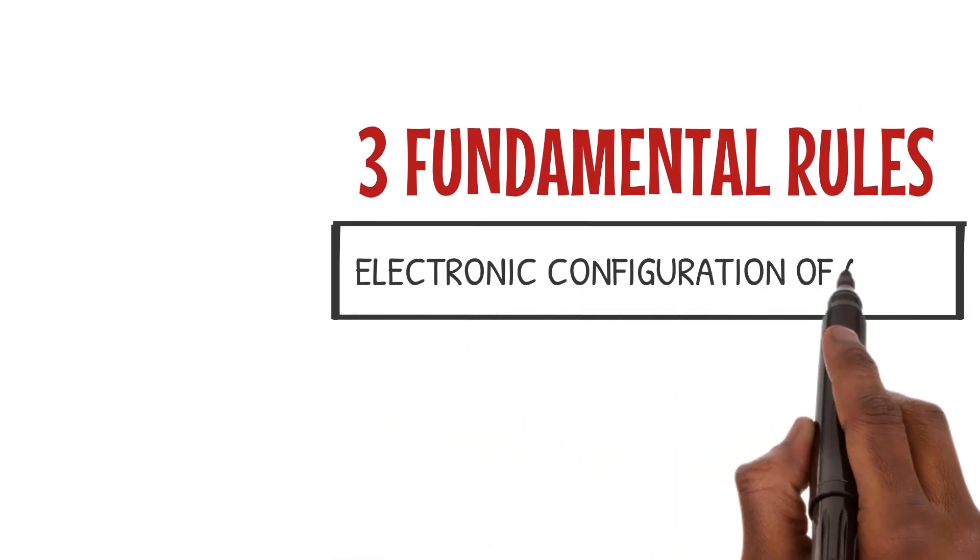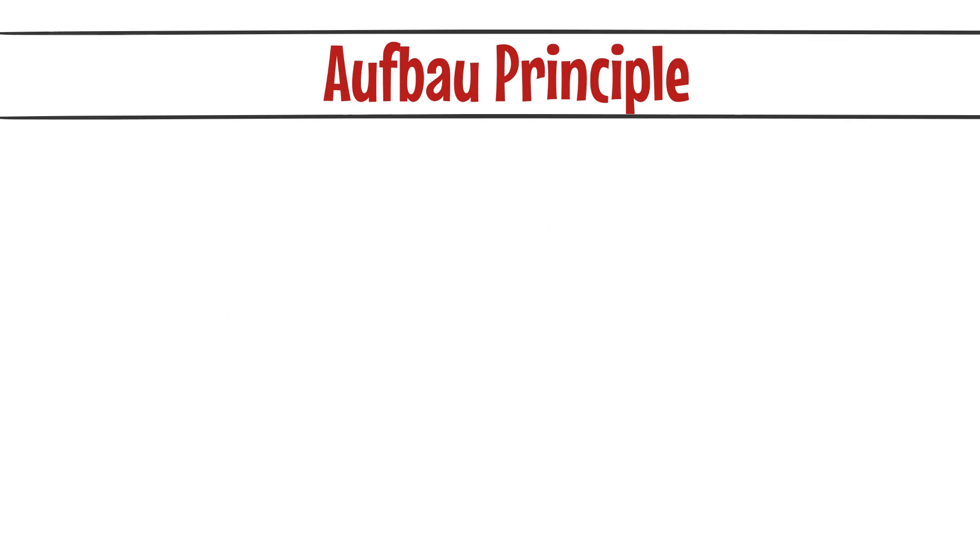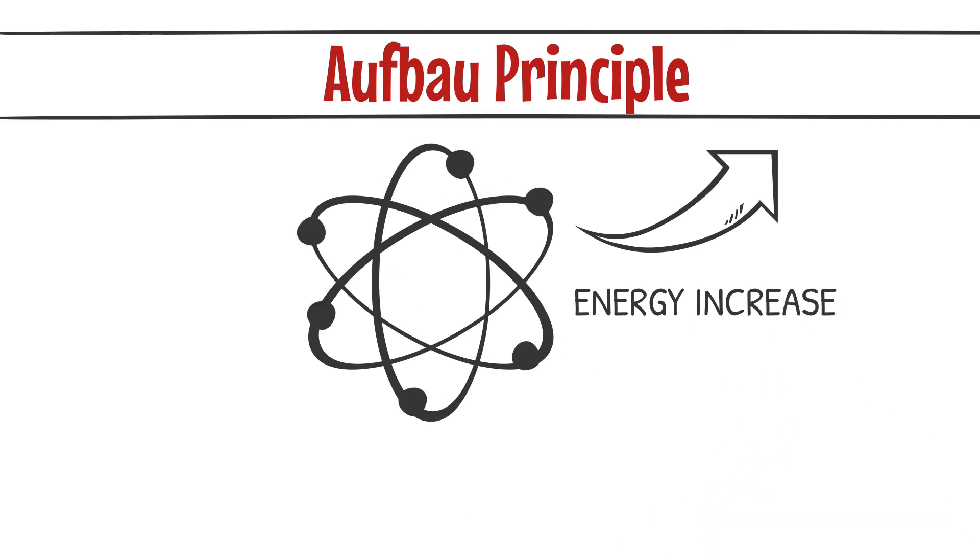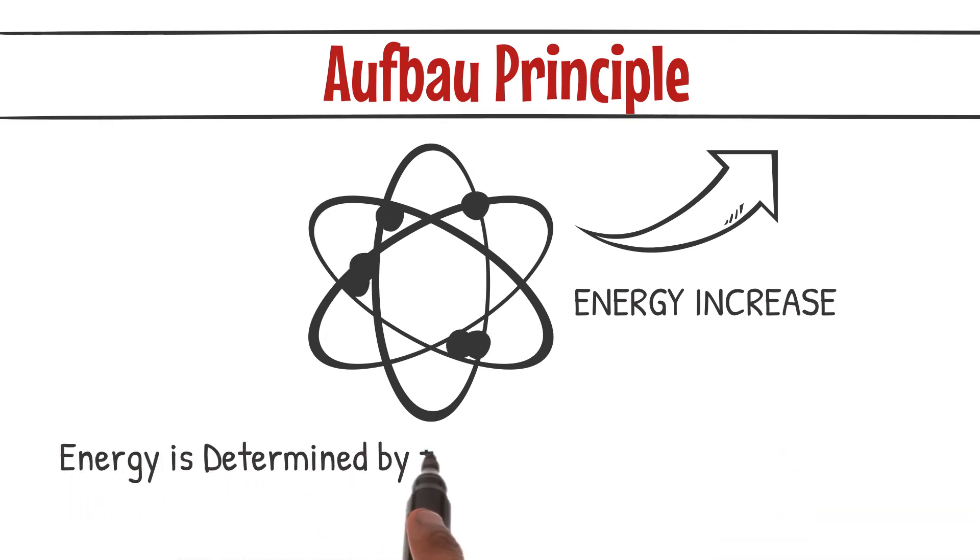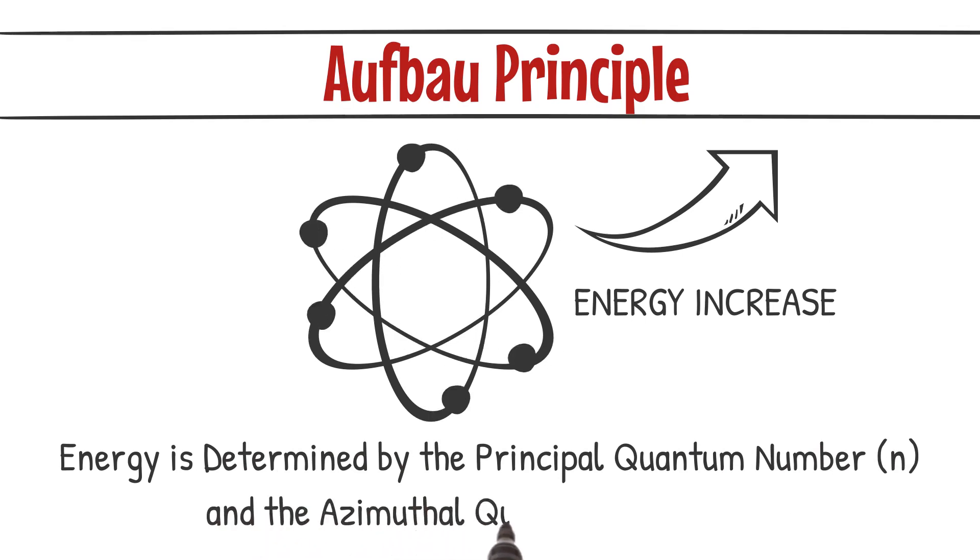The electronic configuration of an atom has three fundamental rules to guide us. The first rule is the Aufbau principle, which tells us that electrons fill orbitals in order of increasing energy. The energy is determined by the principal quantum number n and the azimuthal quantum number l.